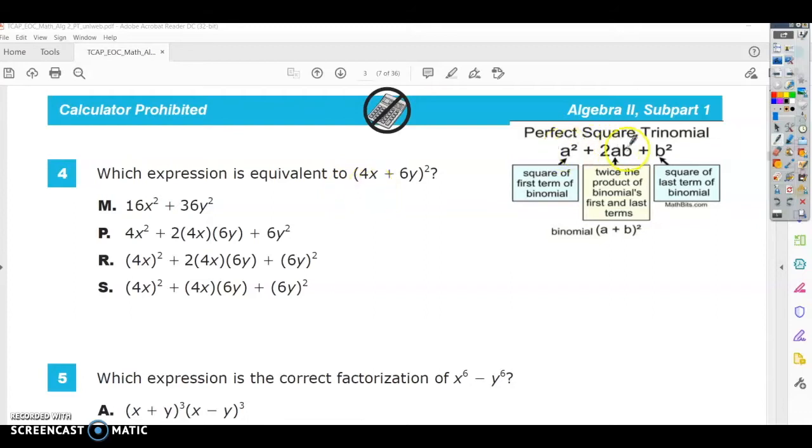So if you remember a perfect square trinomial, that's a formula that you need to know not only for the EOC, but it's also big on the ACT. So this is something that's handy to know, but you're going to take this, it's a perfect square trinomial, so you're going to square the first term.